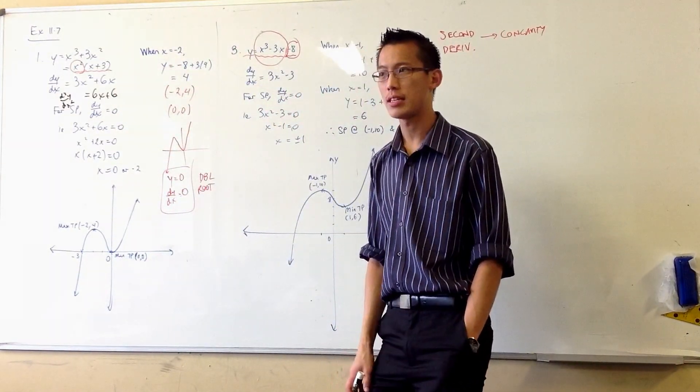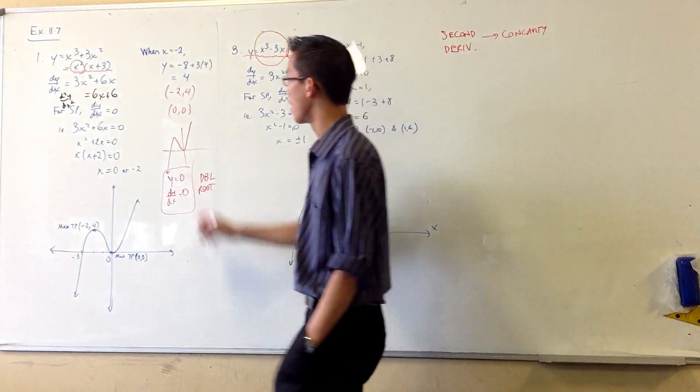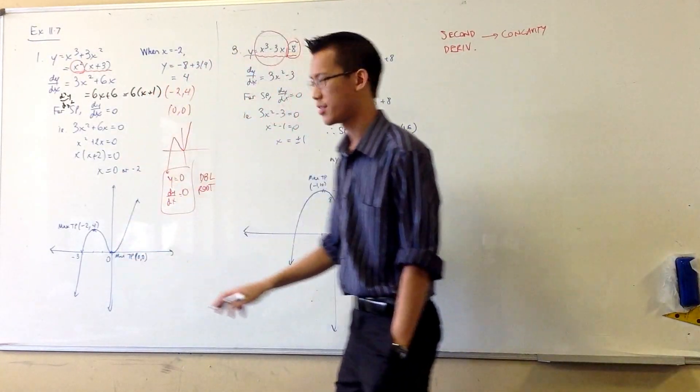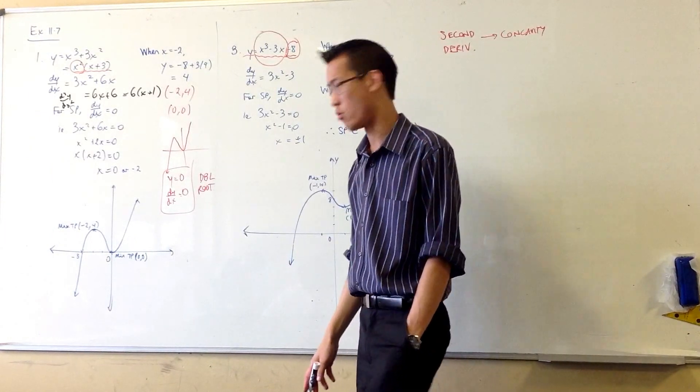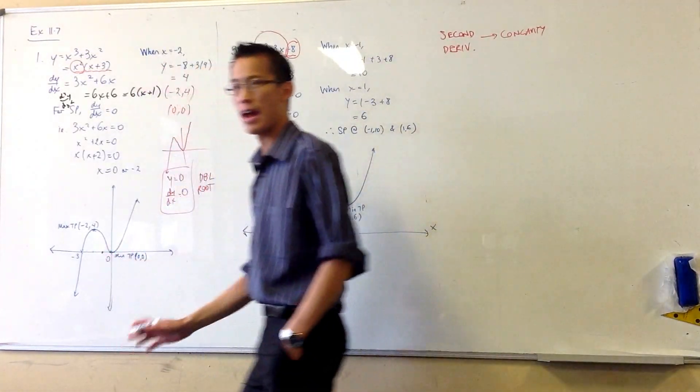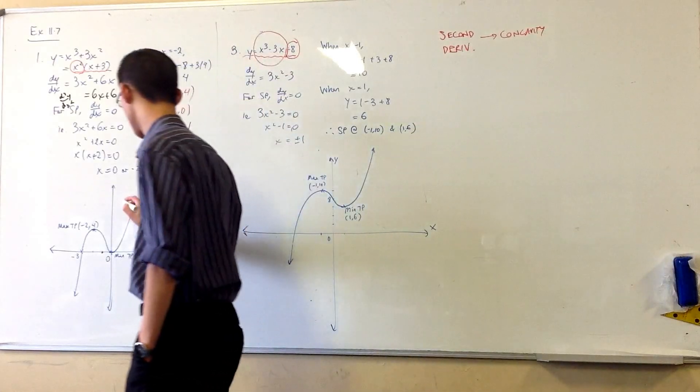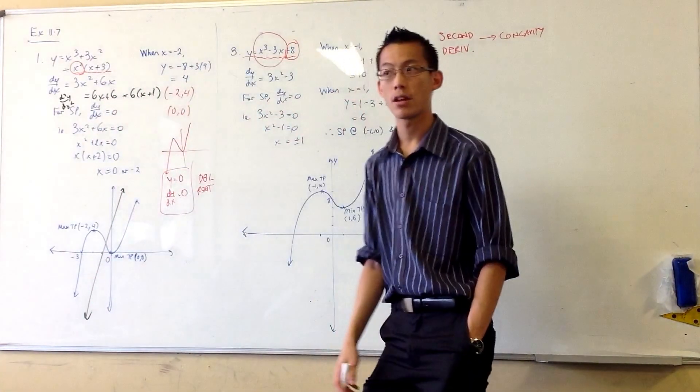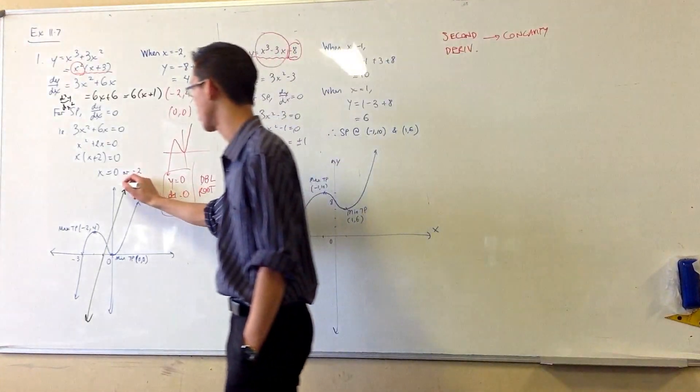So 6x plus 6, what does this thing look like? This is 6 outside of x plus 1. So it goes through negative 1, which is here. And then it's a steep slope. Something like that. Are you happy with that? There's my second derivative.